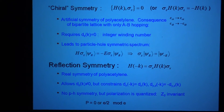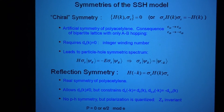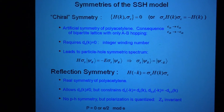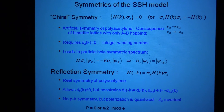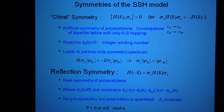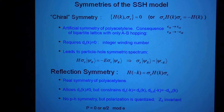This chiral symmetry is an artificial symmetry, in the sense that real polyacetylene — the polyacetylene that happens in the real world — actually does not have this symmetry. Because in real polyacetylene, there's nothing to keep me from having a hopping term that hops the A sublattice to the second-neighbor A sublattice.